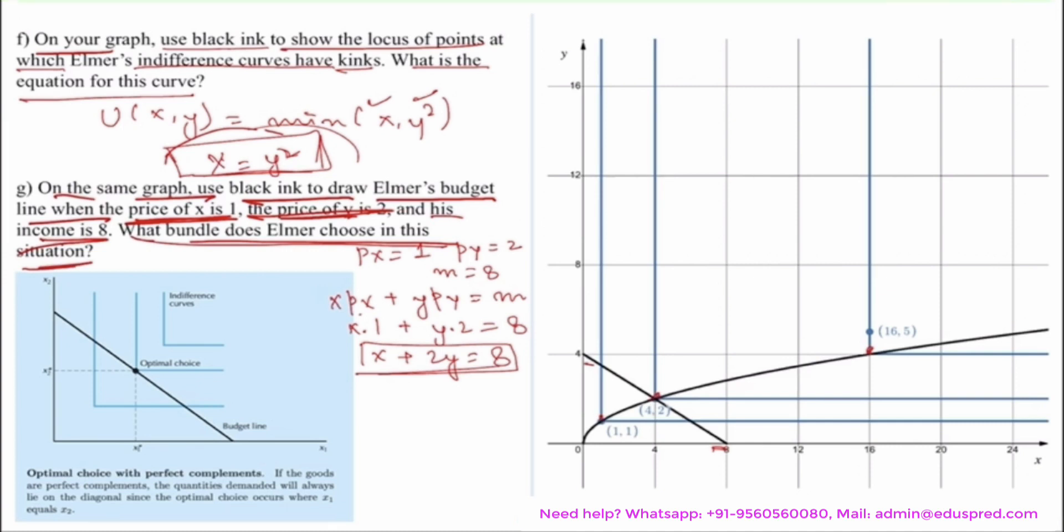Now, the optimal choice with perfect complements: if the goods are perfect complements, the quantity demanded would always lie on the diagonal since the optimal choice occurs where x1 is equal to x2. So here your utility function was of the form minimum of x1, x2. So your optimal choice would always lie on your kink point. Now note that this budget line is intersected with this indifference curve at the point (4,2). So by this method, your optimal consumption bundle would be (4,2).